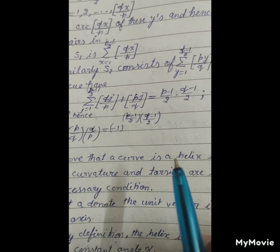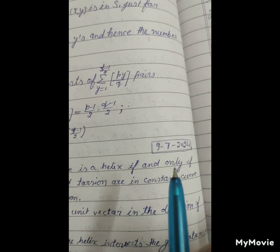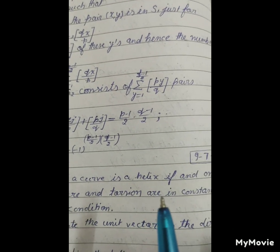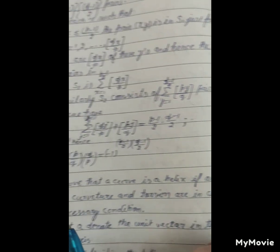Prove that a curve is a helix if and only if its curvature and torsion are in constant ratio.